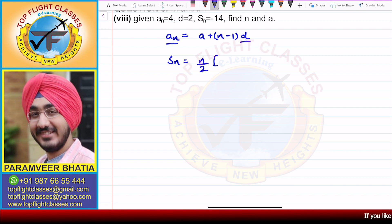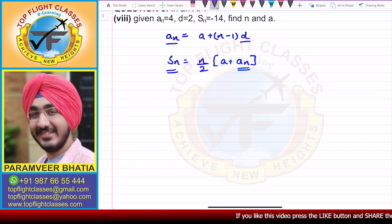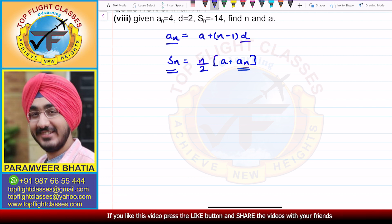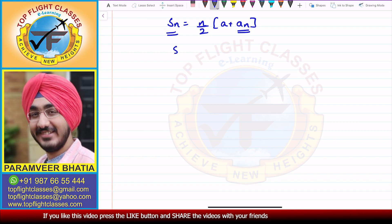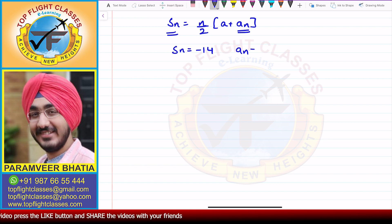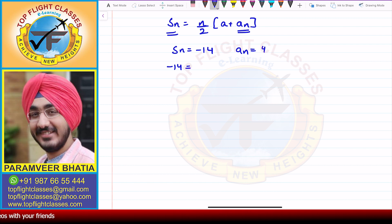We have to find N by 2 times A plus An. So here we have to find N and A. We put the Sn values: Sn is equal to minus 14, and An is equal to 4. When I put these values, I get minus 14 is equal to N by 2 times A plus An, where An is equal to 4.